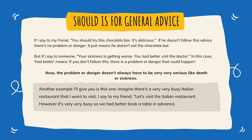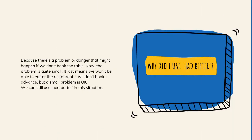Now, the problem or danger doesn't always have to be very serious like death or sickness. Another example: imagine there's a very busy Italian restaurant that I want to visit. I say to my friend, 'Let's visit the Italian restaurant. However, it's very busy, so we had better book a table in advance.' Why did I use 'had better'? Because there's a problem that might happen if we don't book the table — we won't be able to eat there. But a small problem is okay; we can still use 'had better' in this situation.